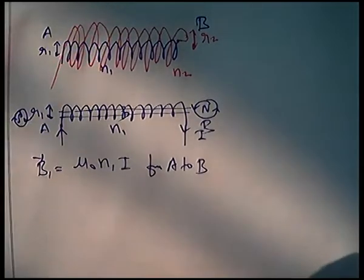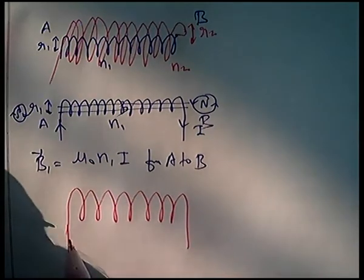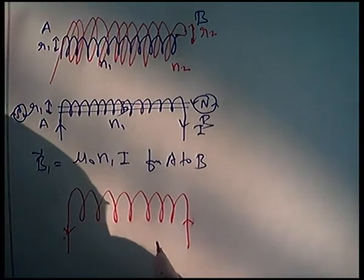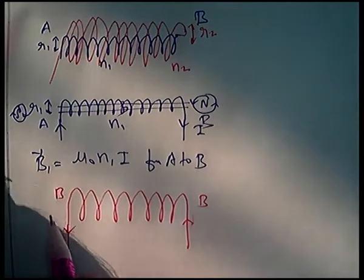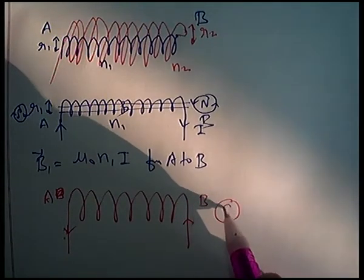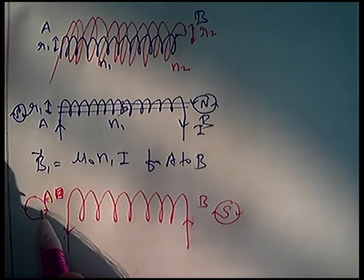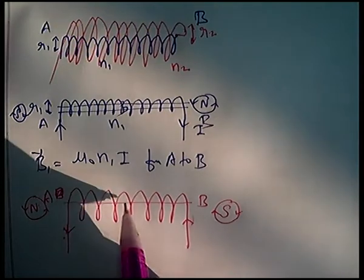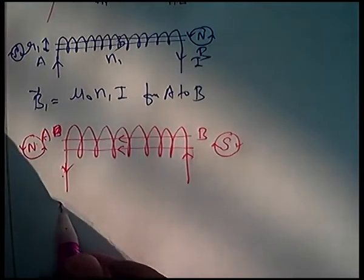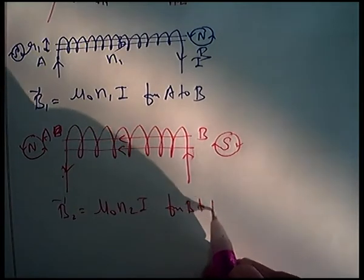Now let's draw the outer coil. The current is opposite in S2. This is also end B on one side and end A on the other. With attention: the current is entering from here, so this end will become your south pole, and here the direction is out, so this will become your north pole. The magnetic field inside solenoid S2 will go from B to A. So B₂ vector equals mu naught N2 I, from B to A.